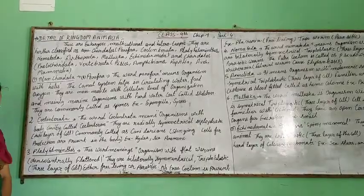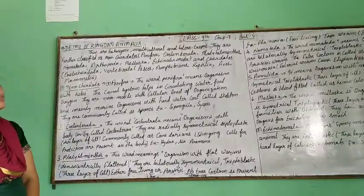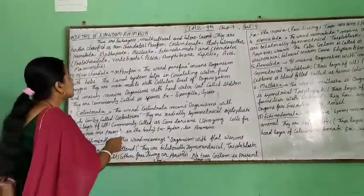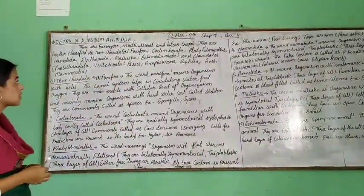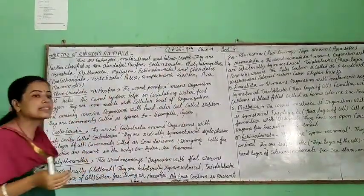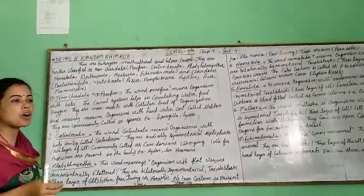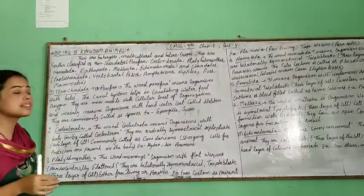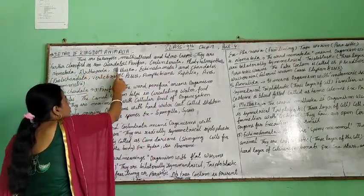In the last video, we learnt the detail of Kingdom Plantae. In this video, we will learn about Animalia. Animals are eukaryotic, multicellular, and heterotrophic. They are further classified as non-chordate.